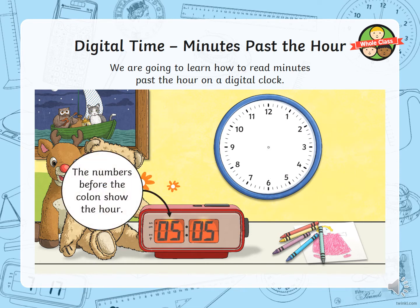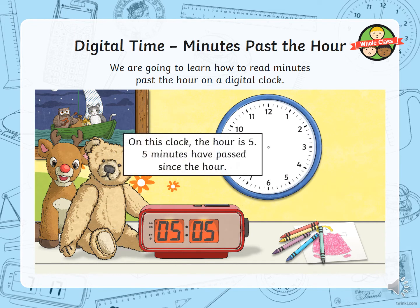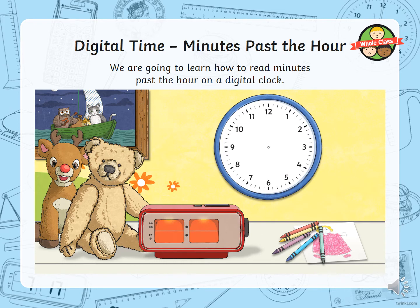The numbers before the colon show the hour, and the numbers after the colon show the minutes that have passed since it was o'clock. So on this clock, the hour is five and five minutes have passed since the hour — the time is five minutes past five.